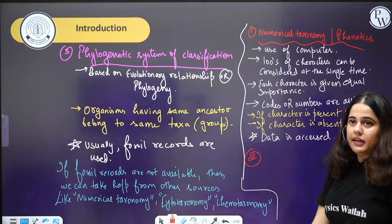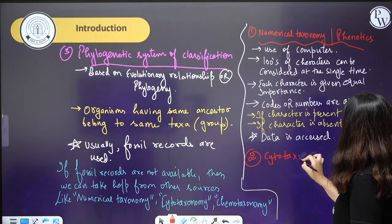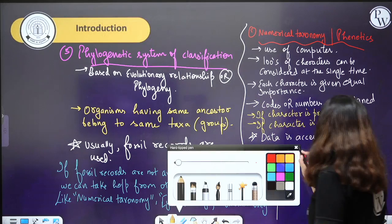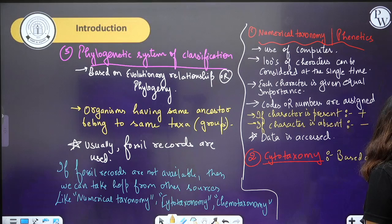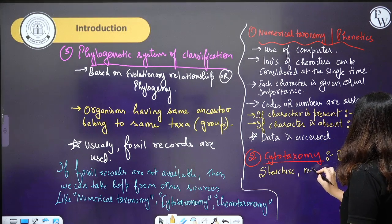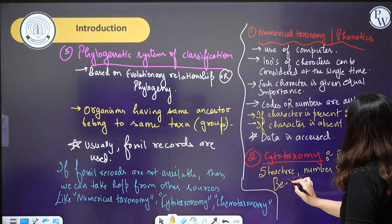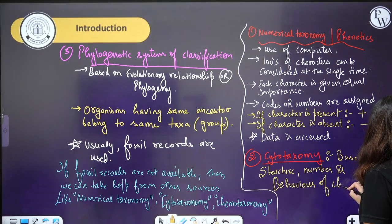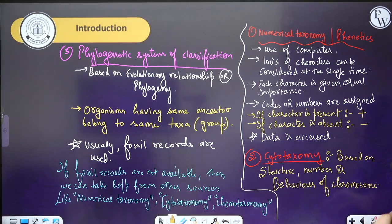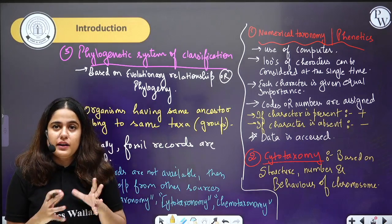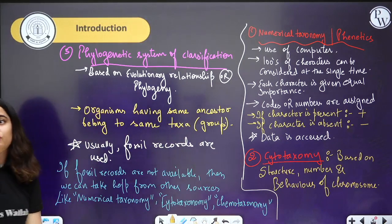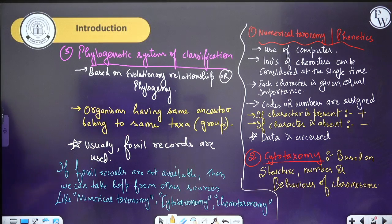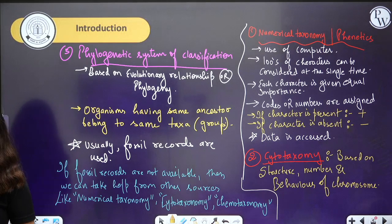Second is cytotaxonomy. In cytotaxonomy, we mainly focus on chromosomes. Cytotaxonomy is based on the structure, number and behaviour of chromosomes. If the number, structure and behaviour of chromosomes are common between two plants, I will put them into the same group. If different, I will put them into separate groups.